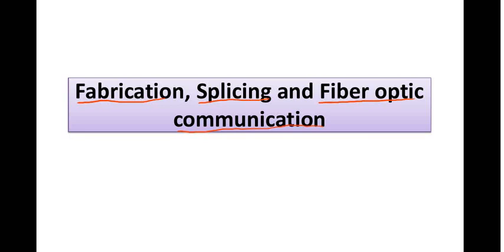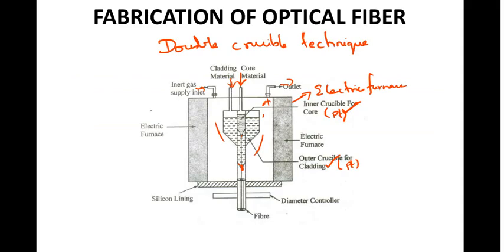First let us see about the fabrication of optical fiber. There are different techniques; in this we are going to see about the double crucible technique. In this technique, using an electric furnace, we take the core material and the cladding material. The core material is placed in the inner crucible, which is made up of platinum.